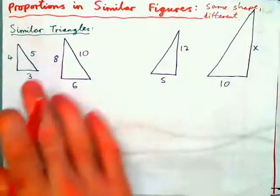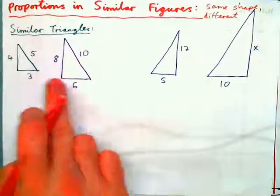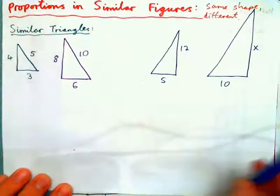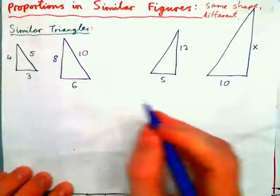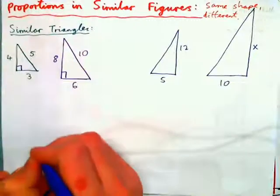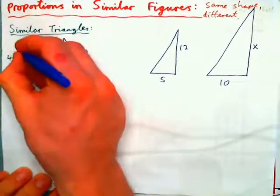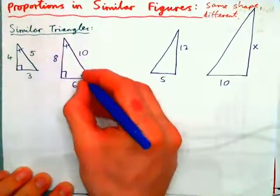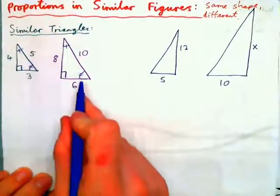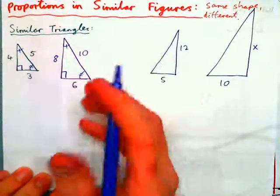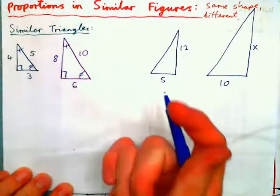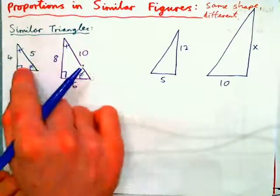For example, these are two similar triangles — the green one and the purple one. You'll notice that they both have right angles. This angle should be the same as this angle, and this angle should be the same as this angle. They have all the same angles, which means they're exactly the same shape. The only difference is one is bigger than the other.